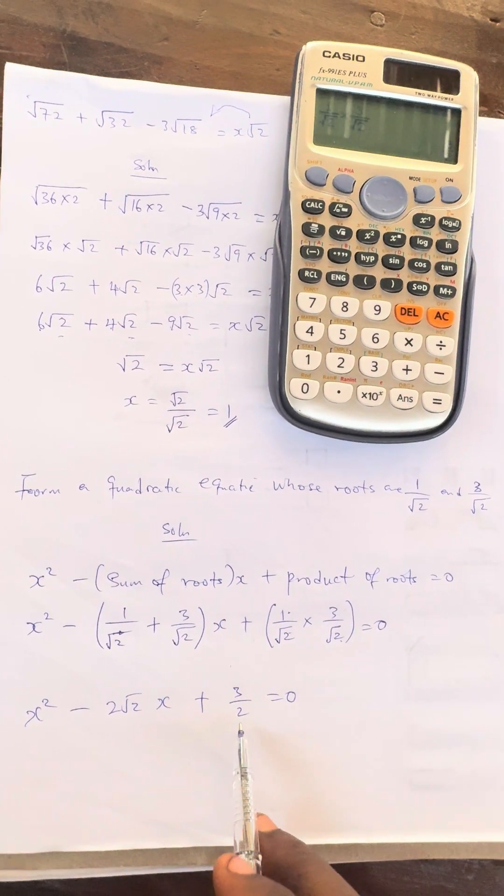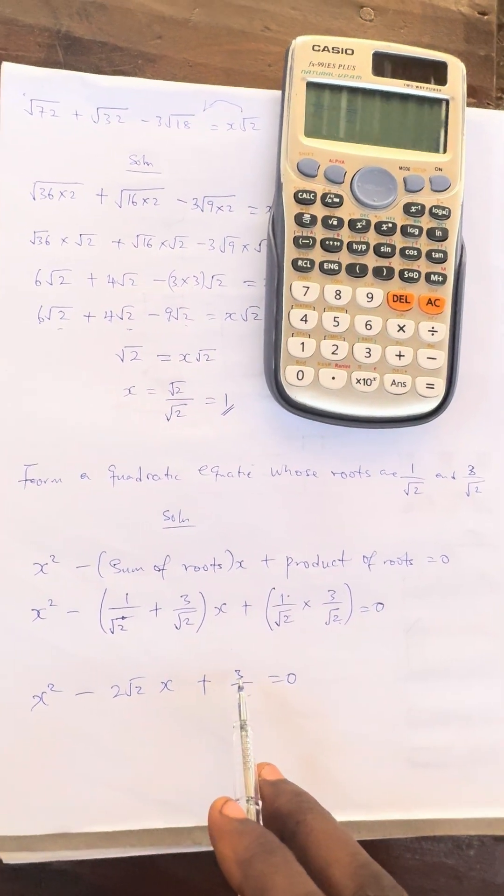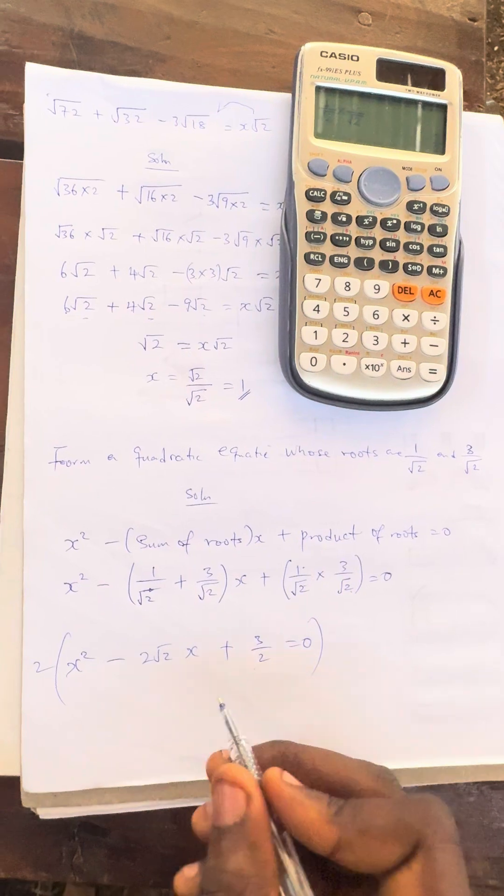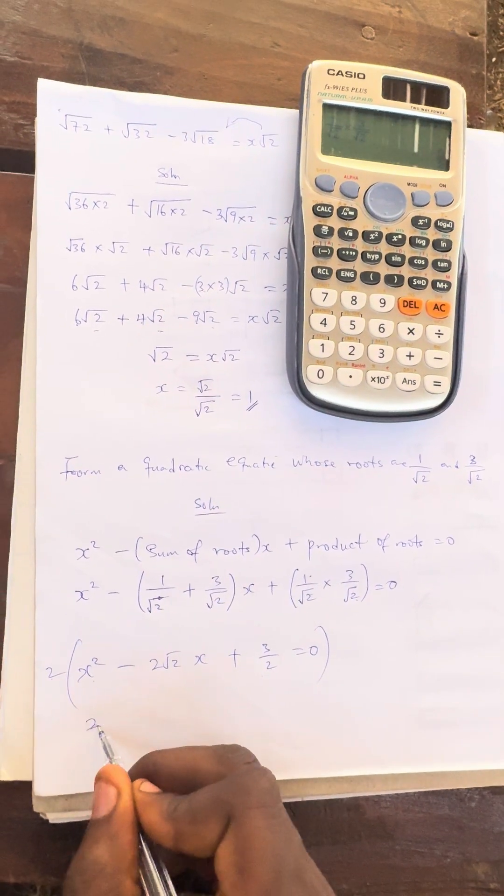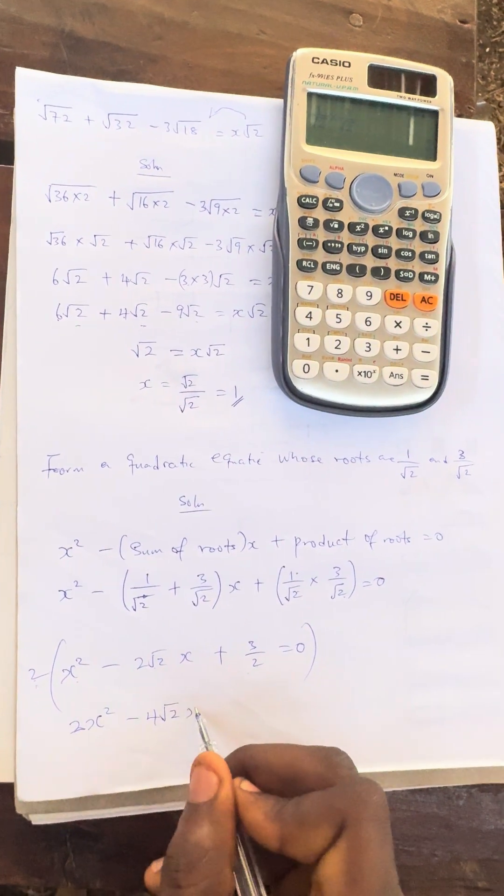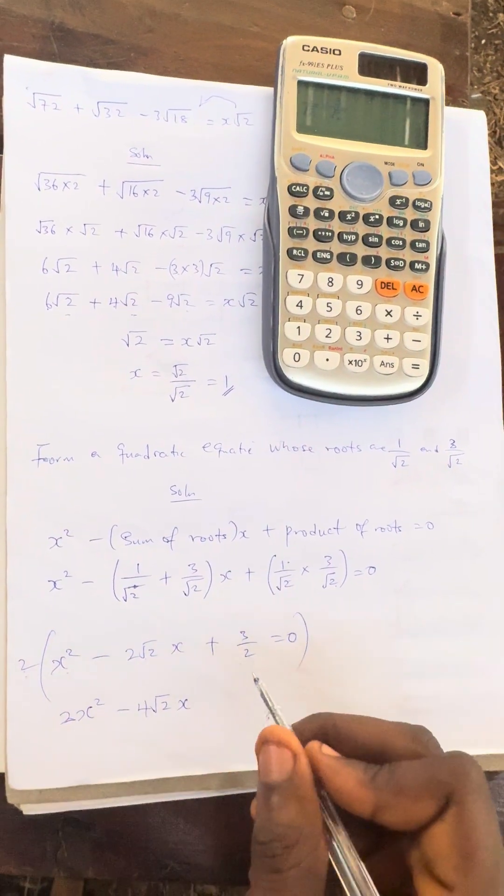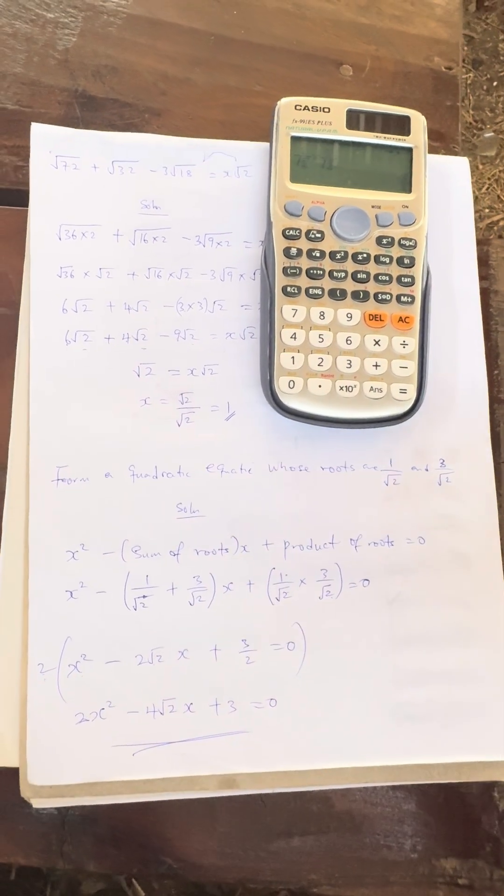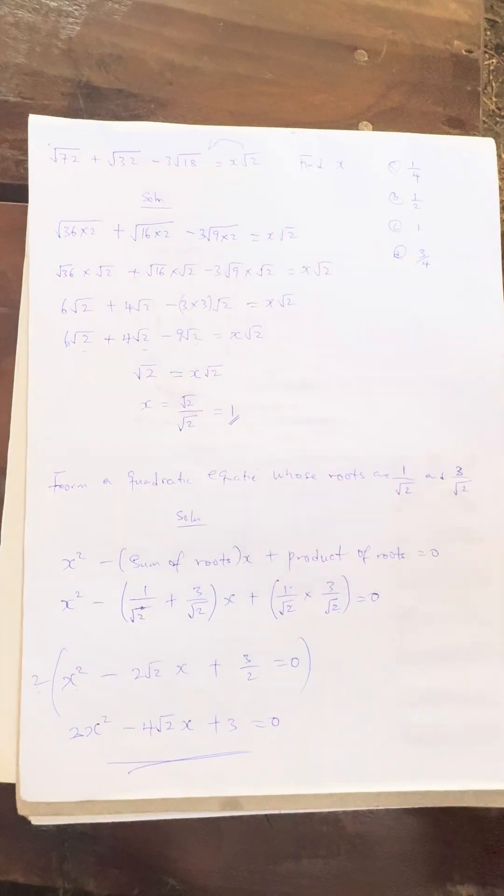Everything equals 0. Because we cannot leave it like this, we have to multiply all through by the denominator that is affecting, which is 2. If you multiply all through by 2, it will cancel this denominator. 2 × x² is 2x², then 2 × this is -4√2x, then 2 × this cancels the 2 here, plus 3 = 0. So this is the quadratic equation for the question.